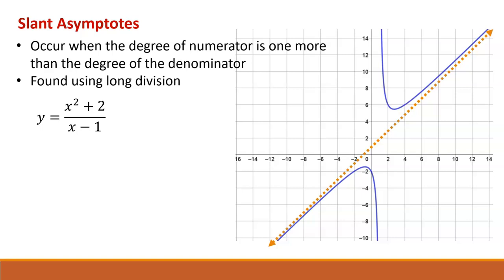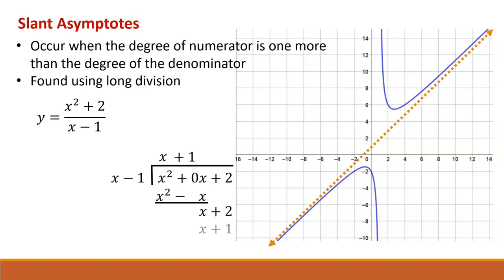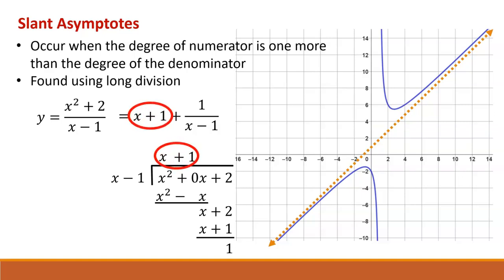Let's go ahead and do that. x squared plus 2 over x minus 1 means we divide x squared plus 2 by x minus 1. Using long division to get a quotient and a remainder, we can rewrite our original fraction as x plus 1 plus 1 over x minus 1. As we get further out toward the edges of our graph, x gets very large, which means the fraction 1 over x minus 1 becomes very small. What we're left with is just x plus 1, giving us the equation for our slant asymptote: y equals x plus 1.